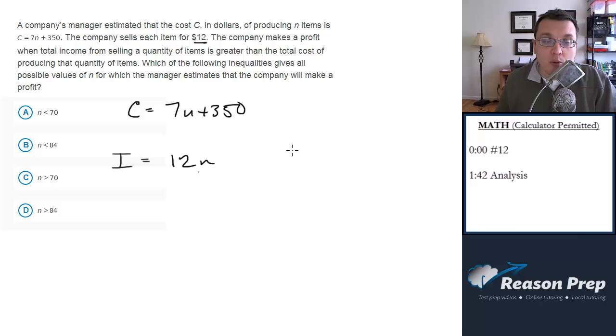So when do we make a profit? We make a profit when i is greater than c, right? The income is greater than the cost. So we can go ahead and set this up. When we get 12n is greater than 7n plus 350, we know we've made a profit. So for all n's that satisfy this inequality, we're going to have a profitable product.